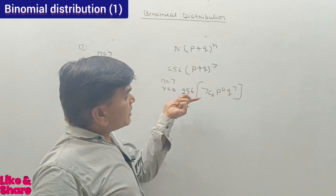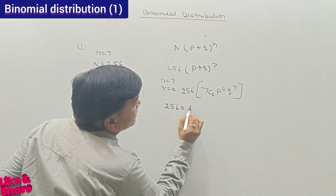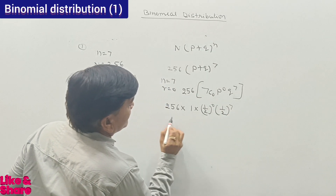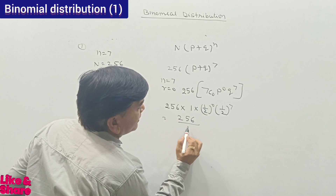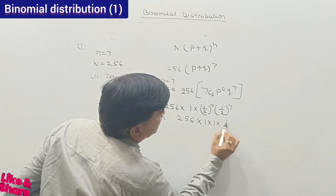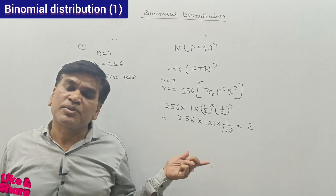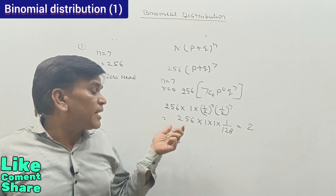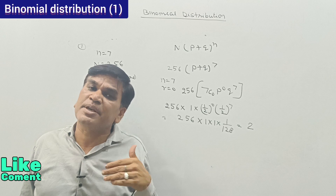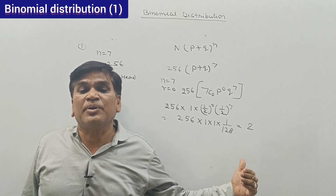This happens repeated 256 times. So 256 × (1/2)^0 × (1/2)^7 = 256 × 1 × (1/128) = 256/128 = 2. There are 2 expected occurrences where we get all tails and no heads out of 256 tosses.